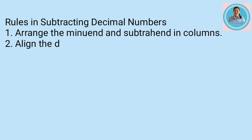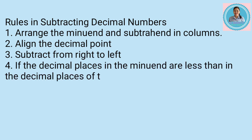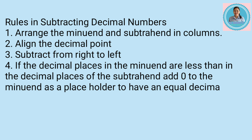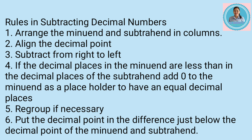First, the rules in subtracting decimal numbers. Number one: arrange the minuend and subtrahend in columns. Number two: align the decimal point. Number three: subtract from right to left. Number four: if the decimal places in the minuend are less than the decimal places of the subtrahend, add zero to the minuend as a placeholder to have equal decimal places.